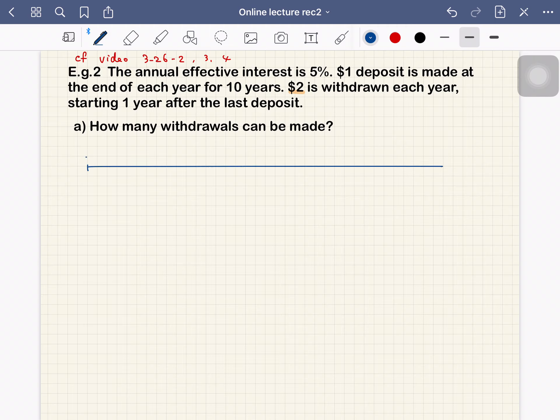In the first 10 years we deposit $1. So 1, 2, 3, up to 10, and $1 each.